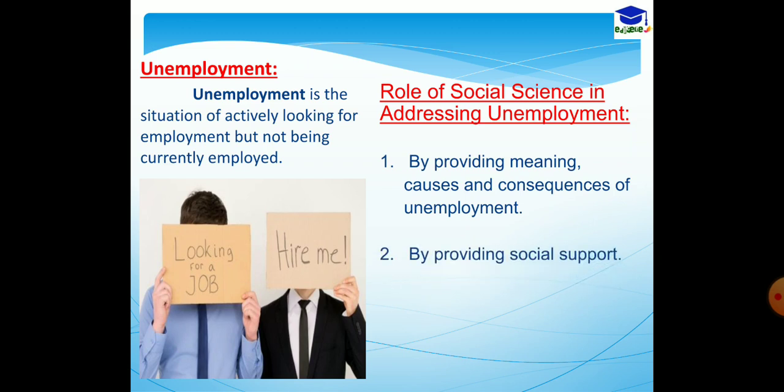Number two, by providing social support. When the subject creates awareness and provides sufficient information about unemployment in the society, the society can ultimately take supportive measures. The society can provide support to those unemployed youths, and that is possible only when they get the information about unemployment, which is made possible by the subject social science.